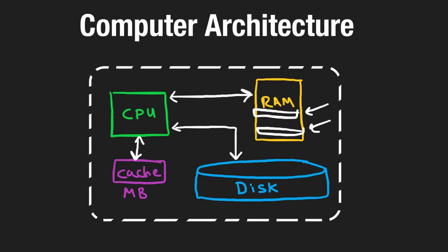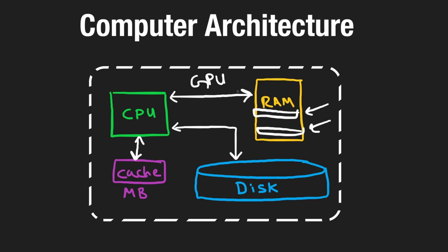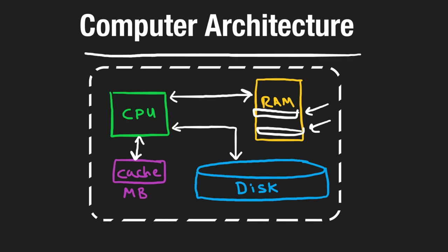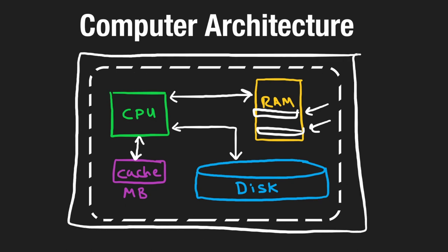This is a general computer architecture overview at a high level. CPUs are more complicated — they have registers — and there are GPUs as well. But as software engineers, this is generally what we need to worry about. There are actually a lot of parallels between what we just covered and designing a distributed system.